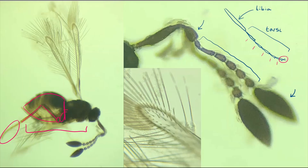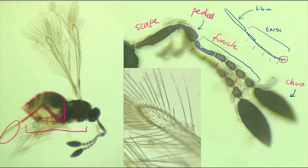Next I need to look at the segmentation of the funicle. In fairyflies like this one, the antennae are split into four main parts: the scape at the base, the pedicel, the funicular segments, and then the clava — or club — at the end. I can count six funicular segments here rather than five or seven, which takes me to the genus Lytus.